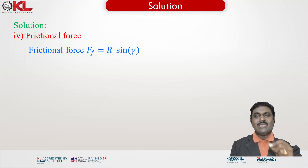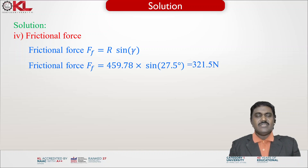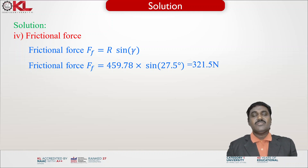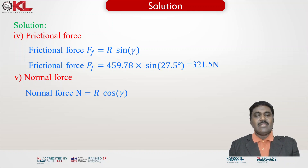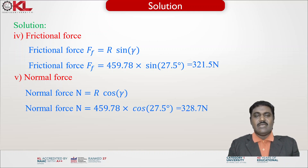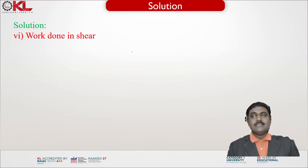For the fourth item, frictional force: Ff = R × sin γ. With the resultant force and angles known, substituting gives Ff = 321.5 Newtons. For the fifth item, normal force: N = R × cos γ. Substituting the data gives N = 328.7 Newtons.